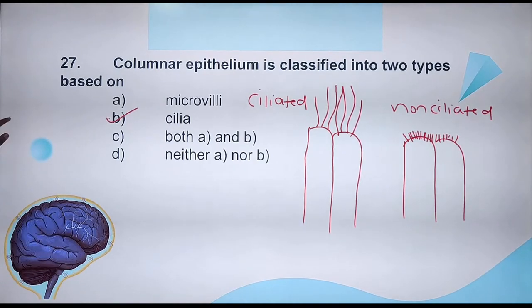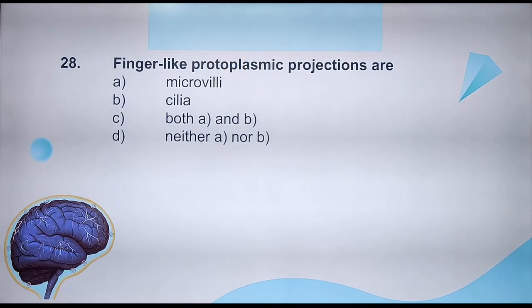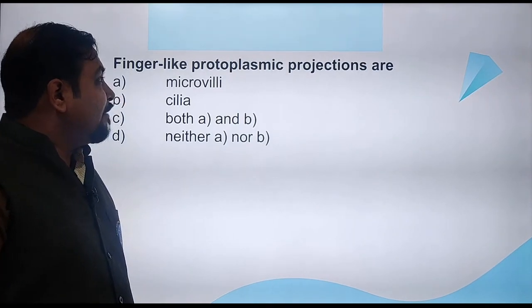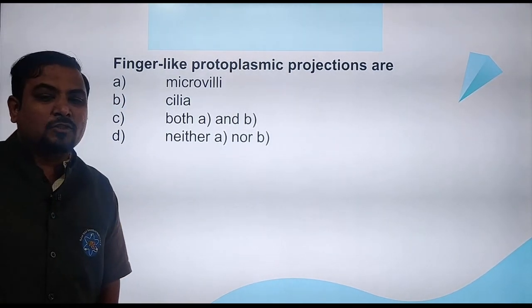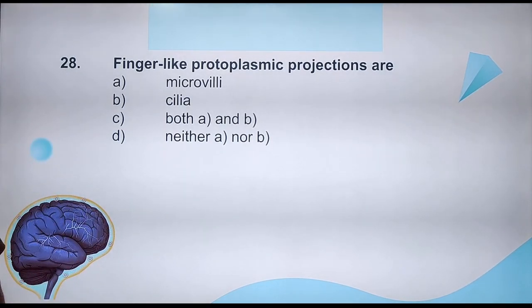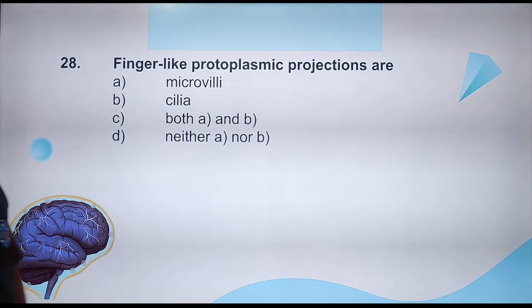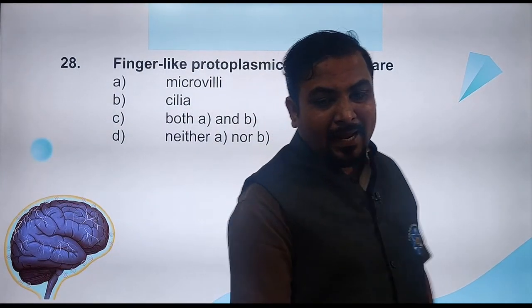Moving to question number 28: Finger-like protoplasmic projections are what? Options — is it microvilli? Is it cilia? Is it both A and B? Or neither A nor B? Finger-like or hair-like projections of the protoplasm — what are these projections called?